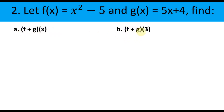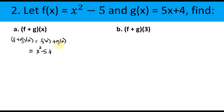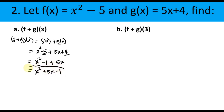Find: number 1, (f + g)(x); number 2, (f + g)(3). Using the formula: (f + g)(x) = f(x) + g(x). Substituting: f(x) is x² − 5, plus g(x) which is 5x + 4. Combining like terms: x² has no like term, so copy it. −5 + 4 = −1, and we also have 5x. Arranging: x² + 5x − 1. That is the answer.